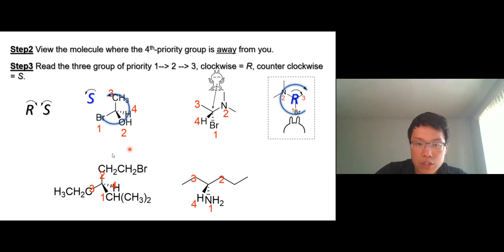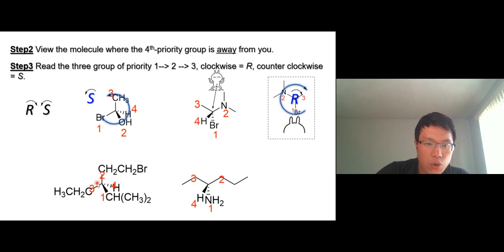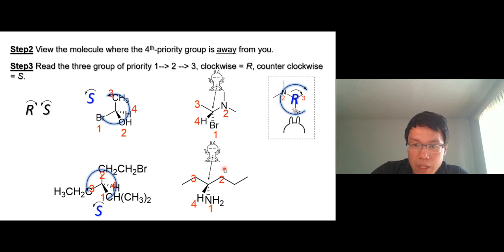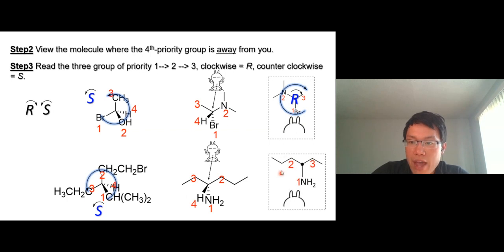Try this one on your own. The fourth priority is already away from you, so we go one, two, and three — that's S. For the next molecule, the fourth priority is in front of you, so we have to look from behind. The propyl group will be on his left hand, the ether group on his right hand, and nitrogen at the bottom. Reading one, two, three — that's clockwise, so this is R.